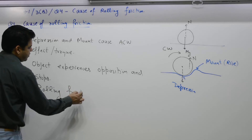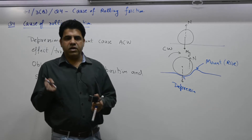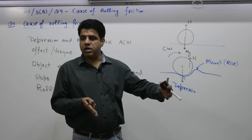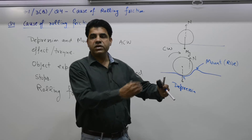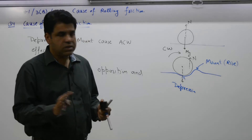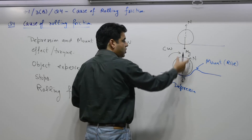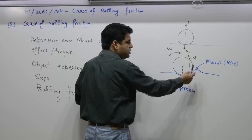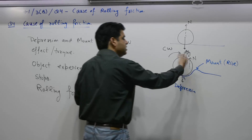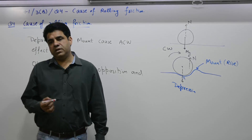This opposition is termed as rolling friction. To summarize: when the bat hits the ball, the ball travels along the ground and stops after covering some distance. When you place a ball on the ground, there is a depression and a mount. This depression and mount together create opposition, and that opposition is termed as rolling friction.